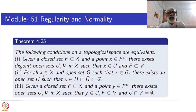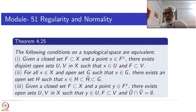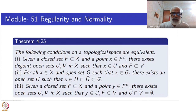The second condition: for all X belonging to X and an open set G such that X belongs to G, there exists an open set H such that X is in H, H-bar is contained inside G. In other words, every neighborhood of a point contains a closed neighborhood. A neighborhood must contain an open subset containing the point, so H-bar is a closed neighborhood and G was an arbitrary neighborhood. Here I said open set G — that is enough because once it is a neighborhood, G can be replaced by a subset which is open.